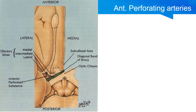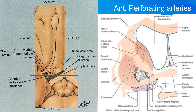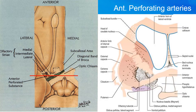If we take a coronal cut of the brain at the level of the anterior perforated substance, we get a picture showing that the basal ganglia is directly above the anterior perforated substance. Hence, lenticulostriate artery strokes will lead to basal ganglia lesions, as in the case of lacunar strokes.